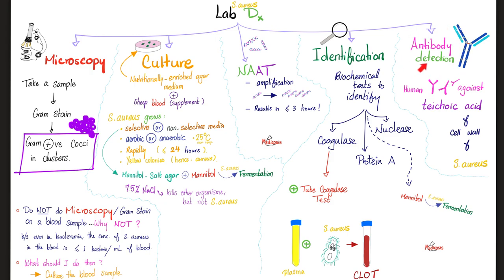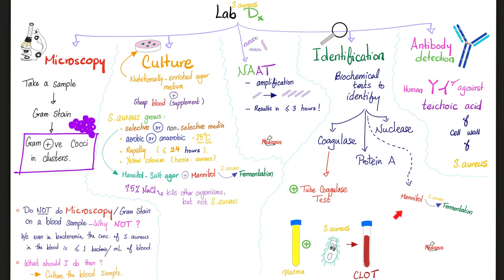Finally, antibody detection: these are your antibodies against the bacteria, specifically against the teichoic acid of the bacterial cell wall. That covers how to diagnose a Staph aureus infection.